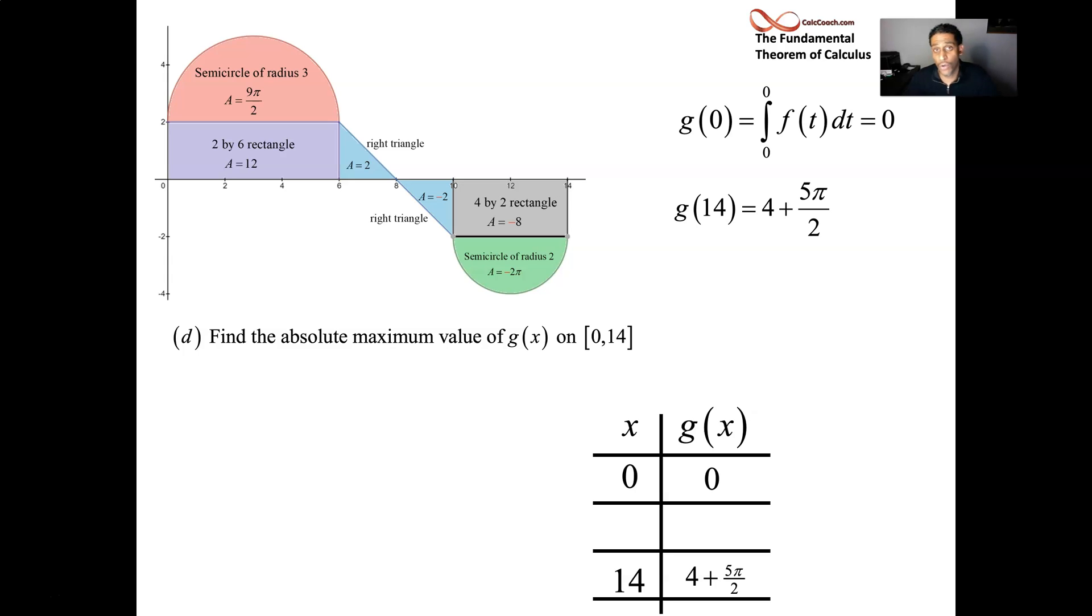Critical points are places where your derivative is equal to 0 or possibly your derivative does not exist, but here the derivative exists everywhere. We take the derivative. We're just getting the function value. And so if I want a critical point, I want to find a place where my derivative is equal to 0 at. Well, it'll be a place where my function is equal to 0 at, because they're one and the same. The derivative of g is the function f. Where's the function equal to 0 at? Where does the function cross the x-axis at? x equals 8.